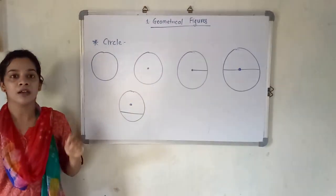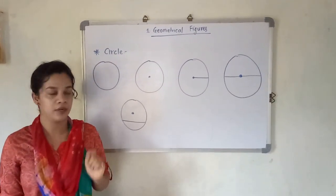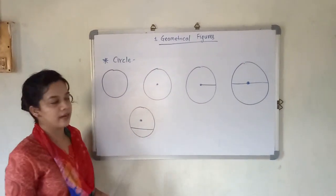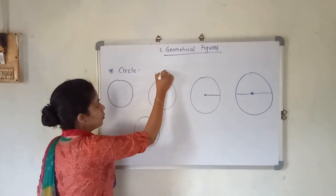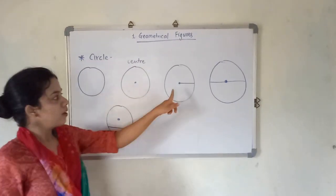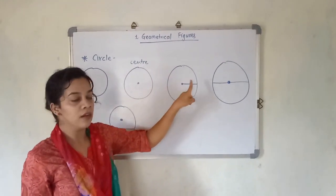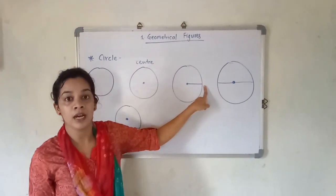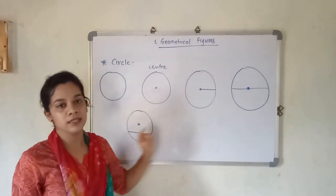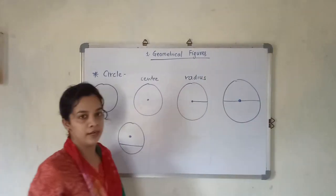They have asked you to study the parts of the circle. So what are the parts? First, this point in the middle is called the center of the circle. When you draw a line starting from the center and touching the circle on the other side, that line is said to be a radius.